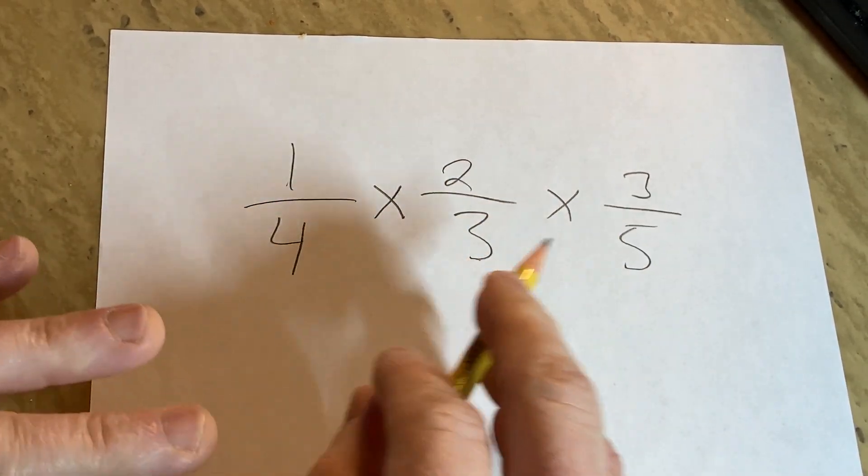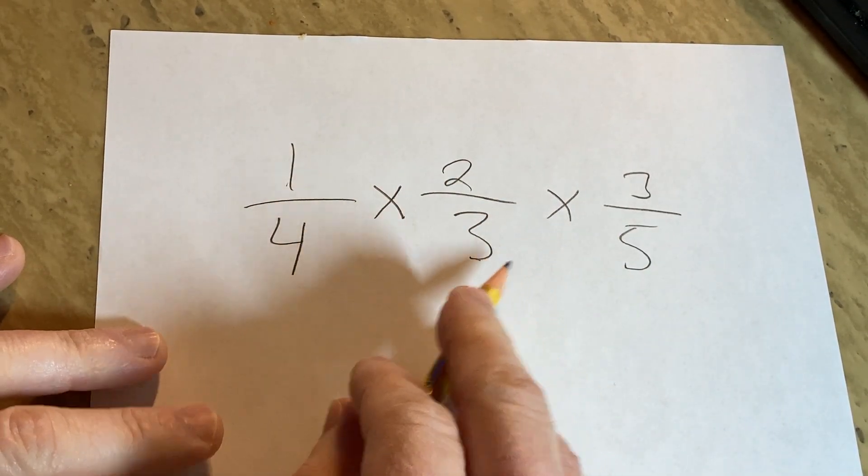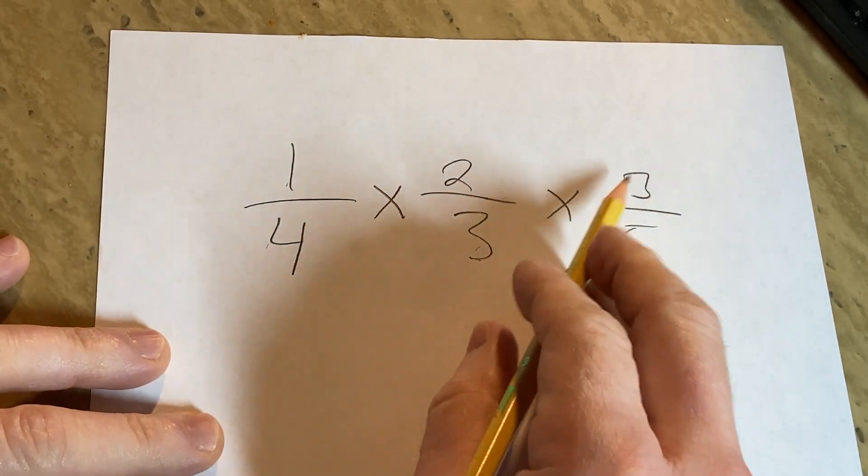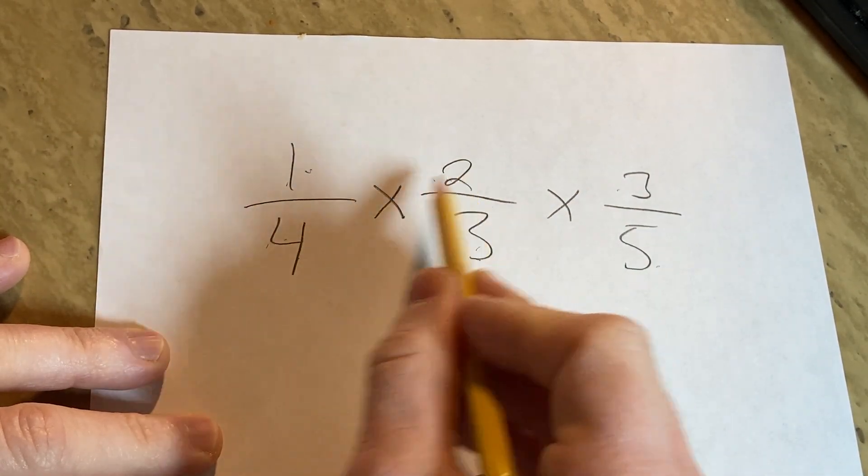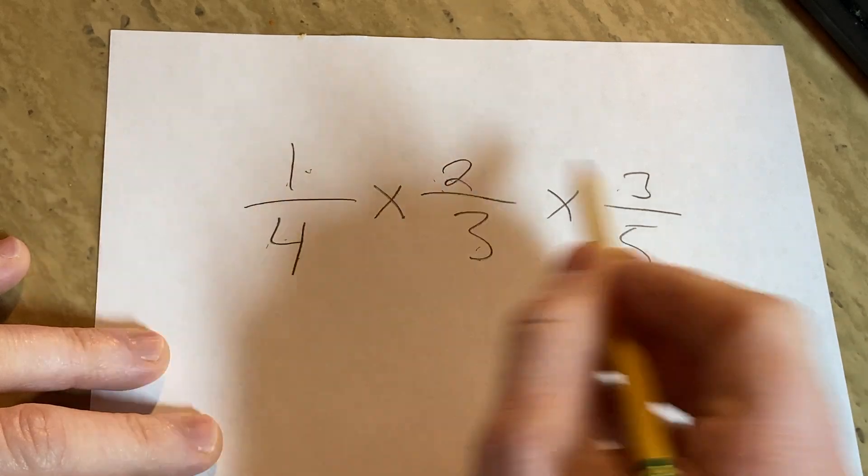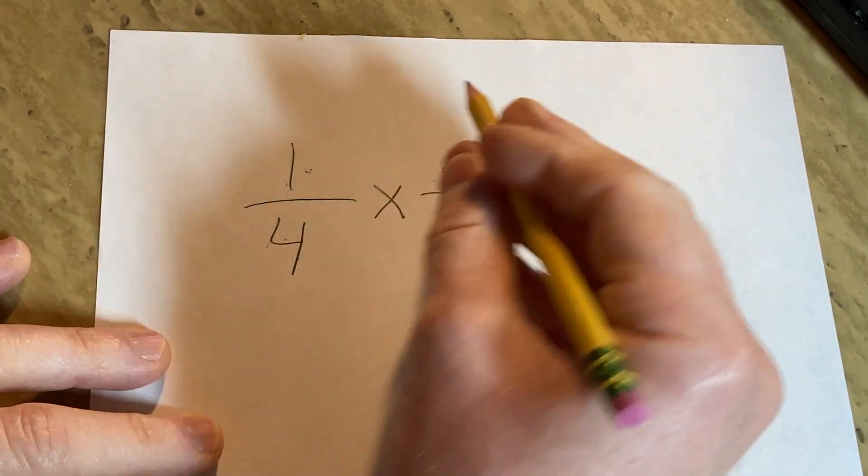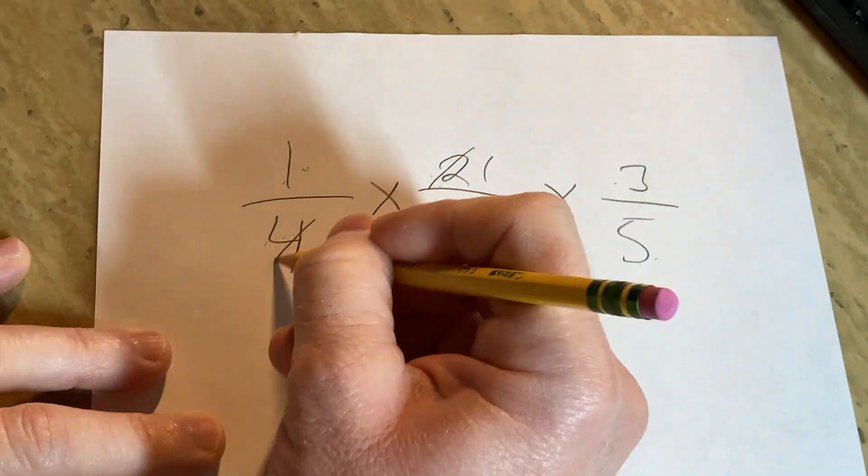When you're multiplying fractions, you can cancel numbers that are on the bottom with numbers that are up top. So for example, 4 and 1 - no. 4 and 2 - you can do some simplification there. 4 and 3 - no. So here are the 4 and the 2. 2 goes into 2 once, and it goes into 4 twice.